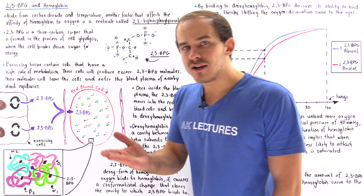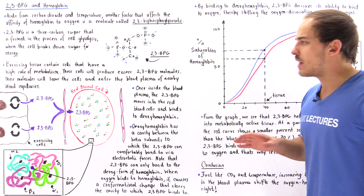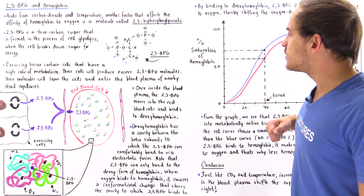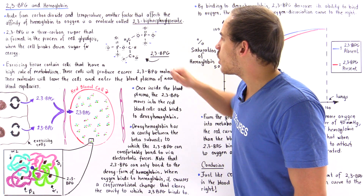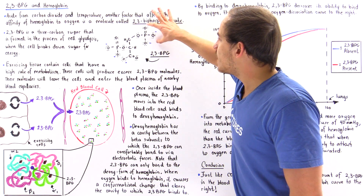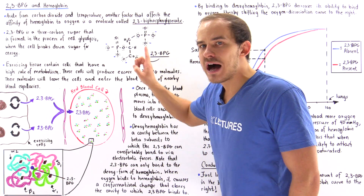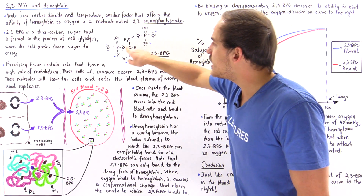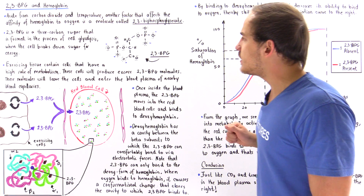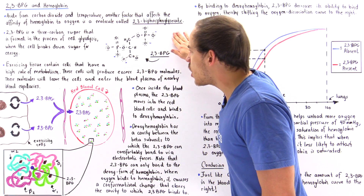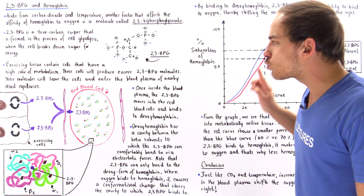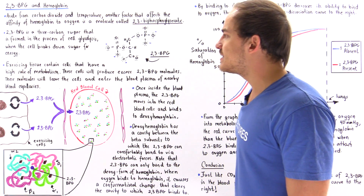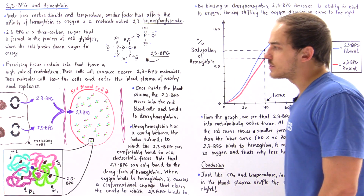What exactly does a 2,3-BPG molecule look like? We have 1, 2, 3 carbons and also two phosphate groups. These two phosphate groups, because they have a negative charge, play a crucial role in actually binding to our deoxyhemoglobin molecule.